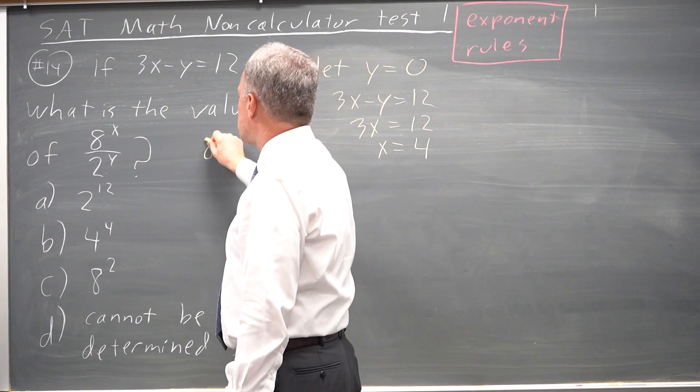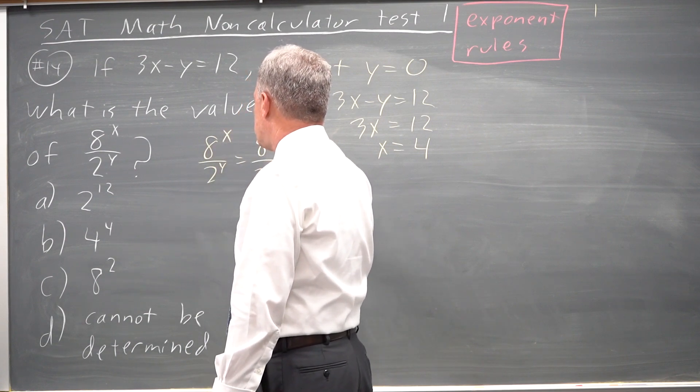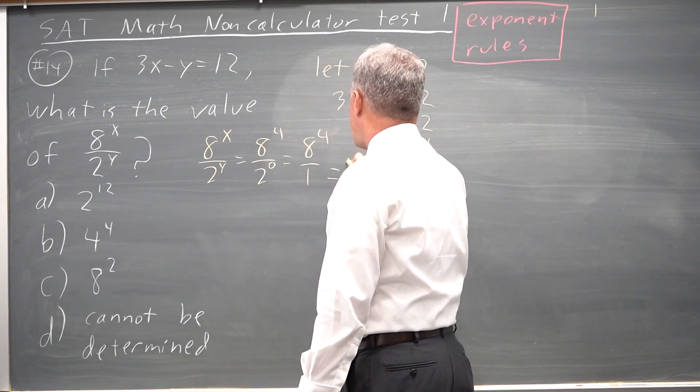So 8 to the x over 2 to the y is 8 to the 4 over 2 to the 0, which is 8 to the 4 over 1, which is just 8 to the fourth power.